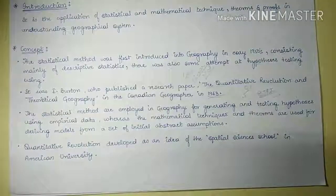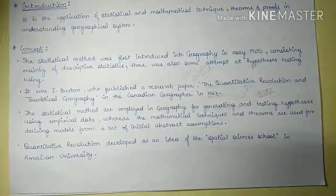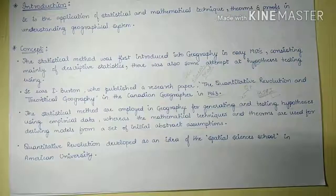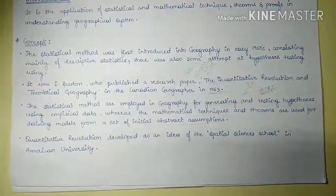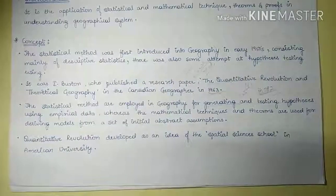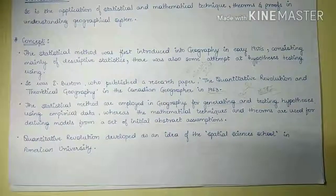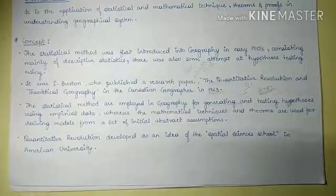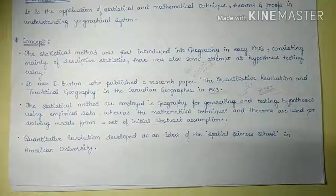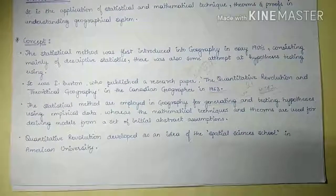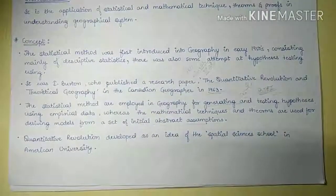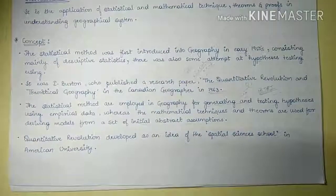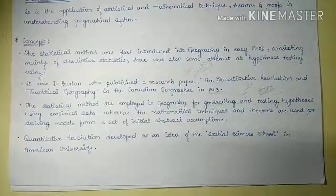Looking back at the history of geography, there was confusion amongst geographers and the public about the nature and social relevance of geography. Geographers were not able to explain the significance of geography in regular life. During the Second World War especially, the status of geography as a university discipline came under discussion. After a long debate, James Conant, president of Harvard University, reportedly concluded that geography was not a university subject.